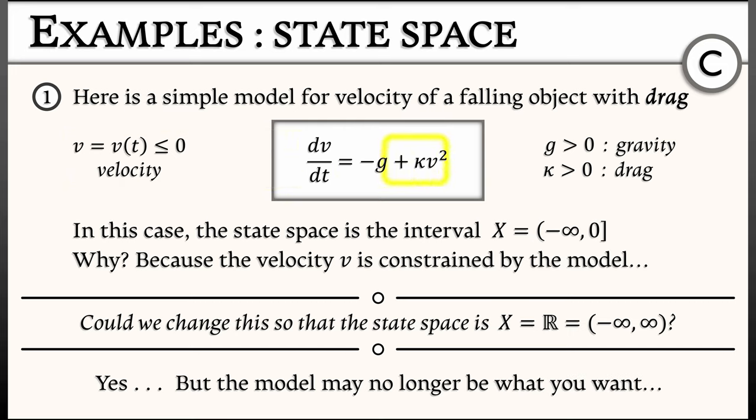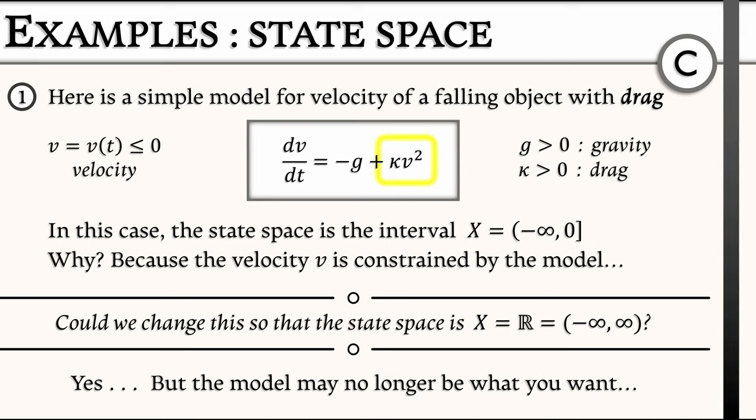Take a look at that second term, that kappa v squared. If v were positive, if the body was moving up, then this model would be saying the dv/dt would be getting bigger based on this kappa, positive number, times v squared? No, I don't think so.